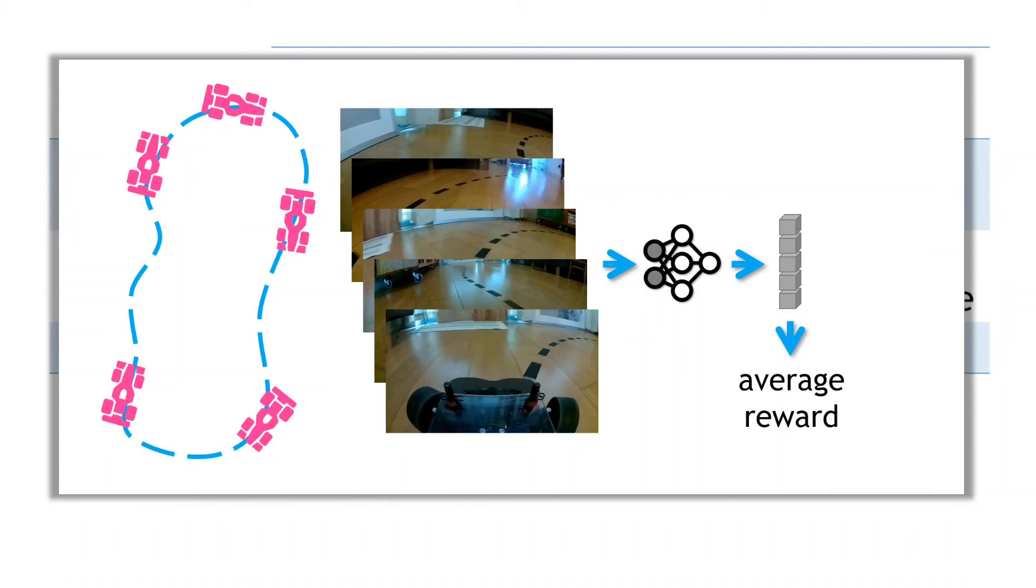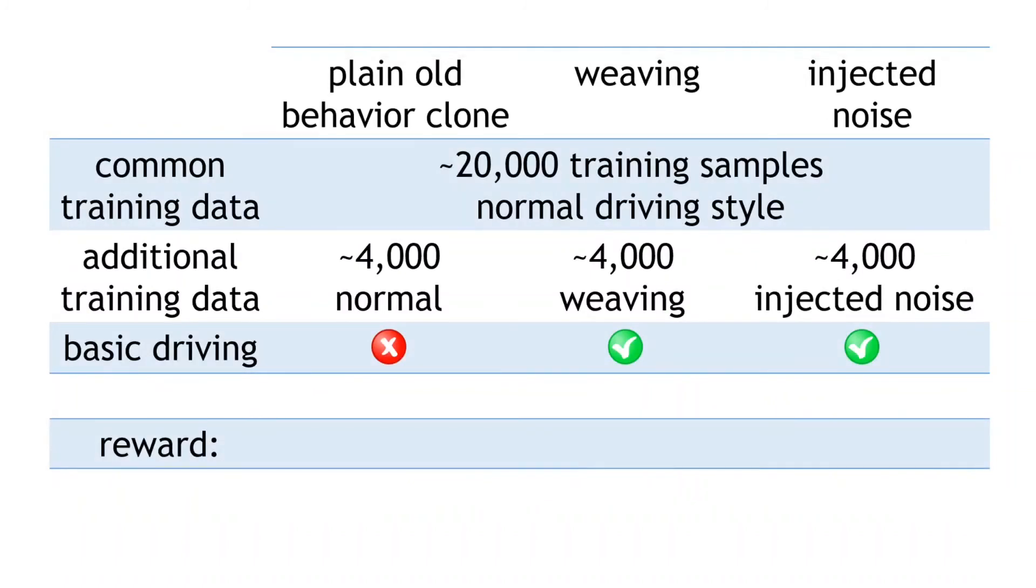So how did our policy models go? Well, for the original behavior cloning, I won't calculate the reward, as it didn't actually pass the basic driving test. But for the weaving trained policy, let's calculate the average reward for the autonomous driving.